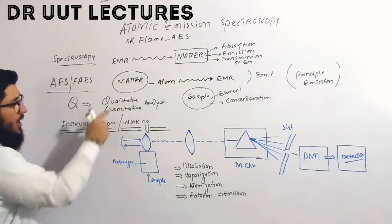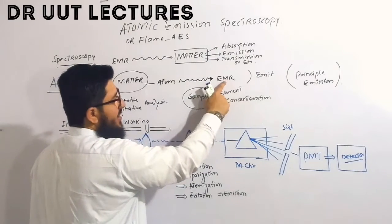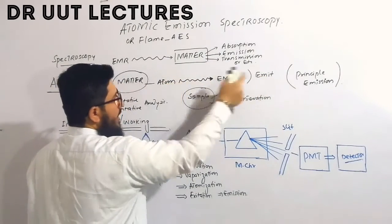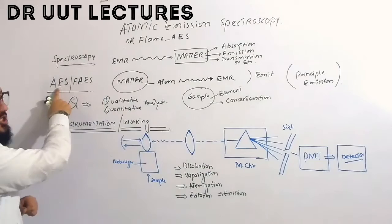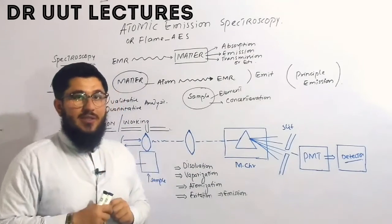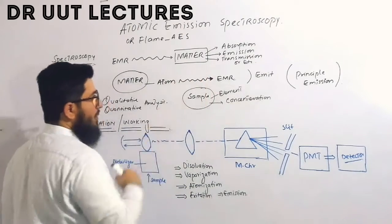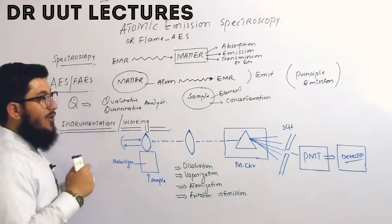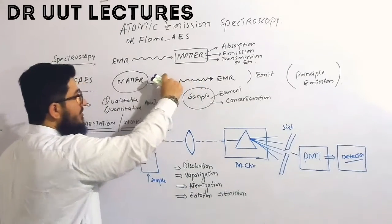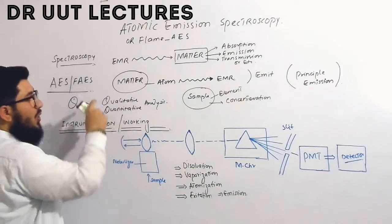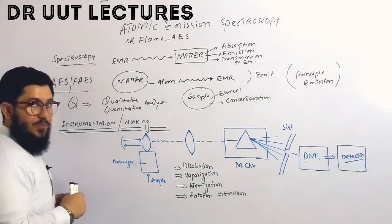In atomic emission spectroscopy, when your matter is an atom and that atom emits electromagnetic radiation, this interaction is called atomic emission spectroscopy. This spectroscopy is also studied under the heading of flame atomic emission spectroscopy. Why is it given that name? Because in order to cause the atom to emit electromagnetic radiation, we take the help of a flame — that is why it is also known as flame atomic emission spectroscopy.